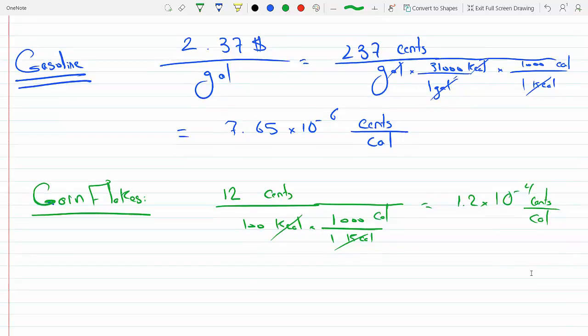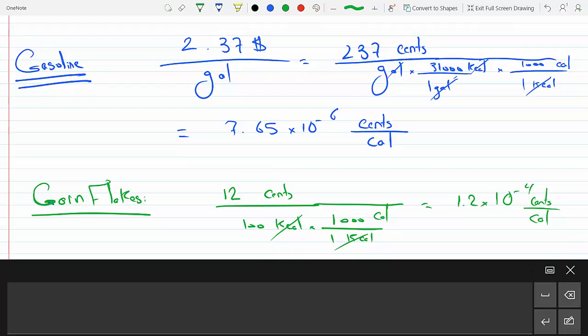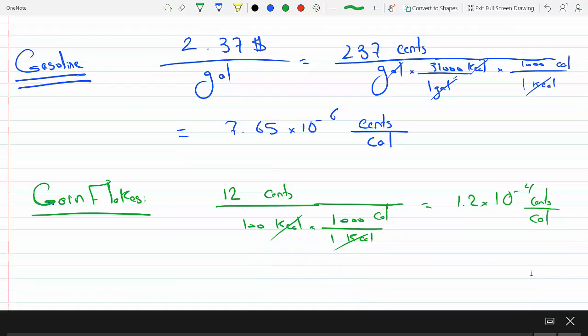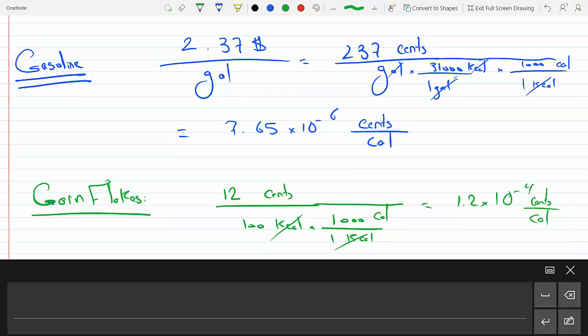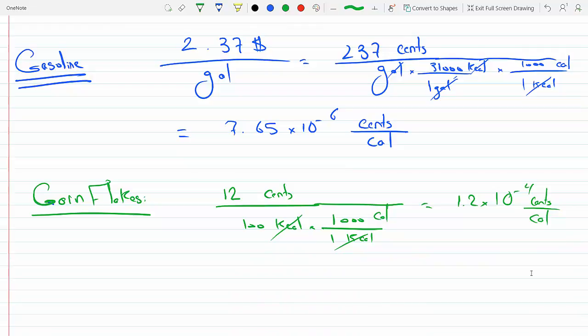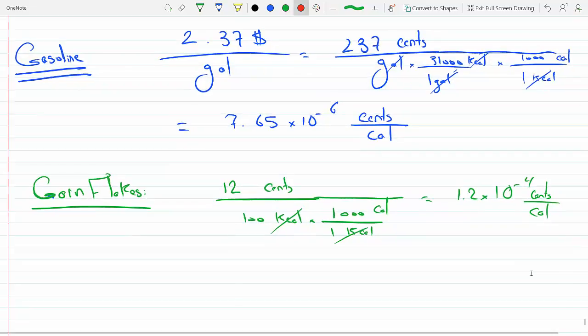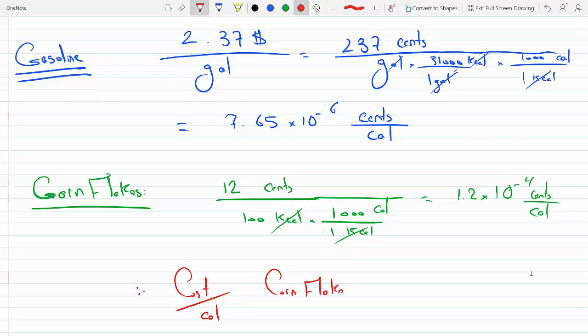It turns out that burning cornflakes actually costs more than gasoline. Therefore, cost per calorie of cornflakes is higher, a lot higher, on the order of almost a hundred times more than gasoline.